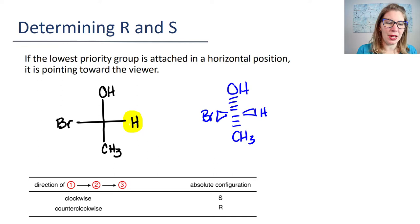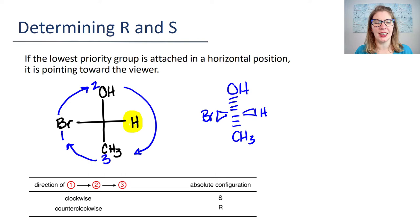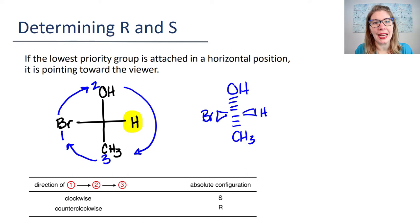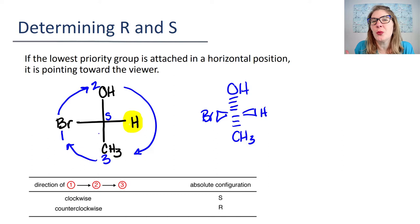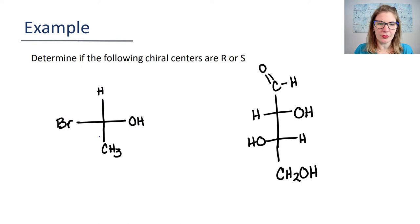So you've just flipped your perspective and all you need to do is flip the consideration. What I mean is: if we find our lowest priority group on a horizontal position and we go through priority one, priority two, priority three — one to two, two to three, back to one — and we're seeing this as a clockwise rotation, this is really an S configuration. Clockwise is R, but if you're looking at it from the opposite direction, meaning your lowest priority group is pointing to your face, then really this is S. That might be a great opportunity to try some models, because you might not understand what I mean until you hold it in your hand.